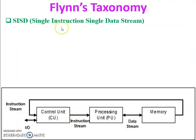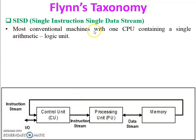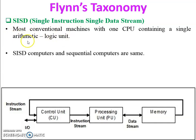Now let's see SISD. In the figure you can see SISD has a control unit, processing unit, and memory unit — all individual units. Instructions come from memory one by one in sequence and are given to the control unit. The control unit passes the instruction to the processing unit, which accesses the data as per the instruction from main memory. SISD is the most conventional machine with one CPU containing a single arithmetic and logic unit. SISD computers and sequential computers are the same.